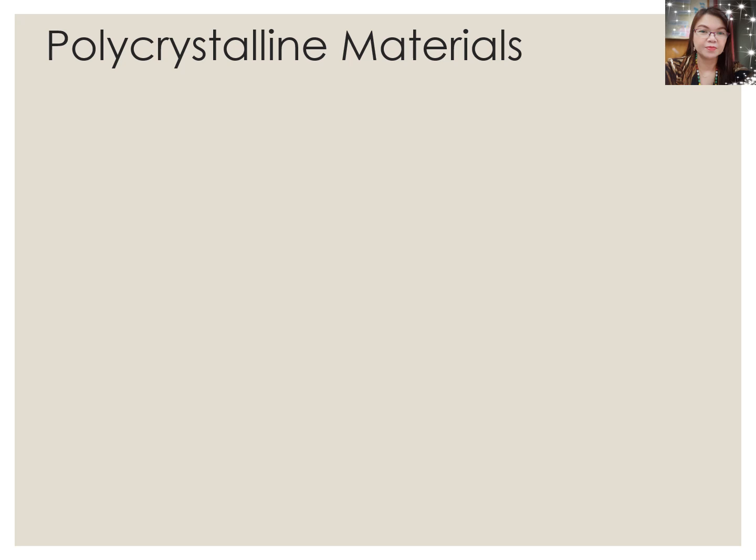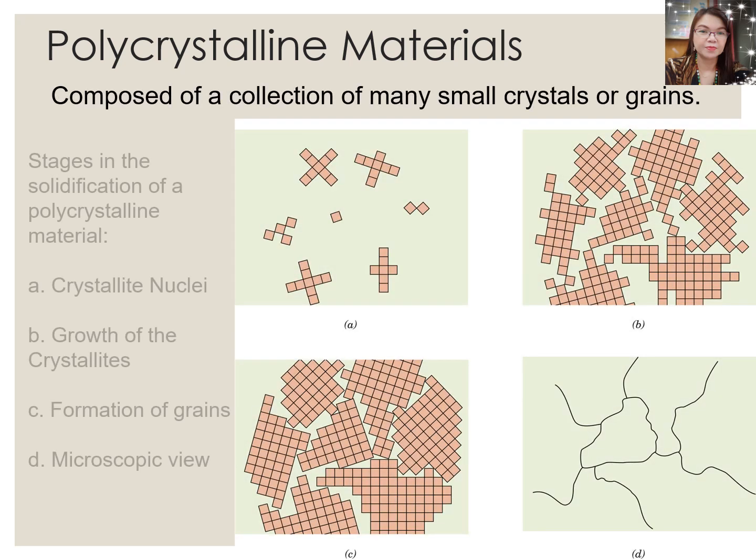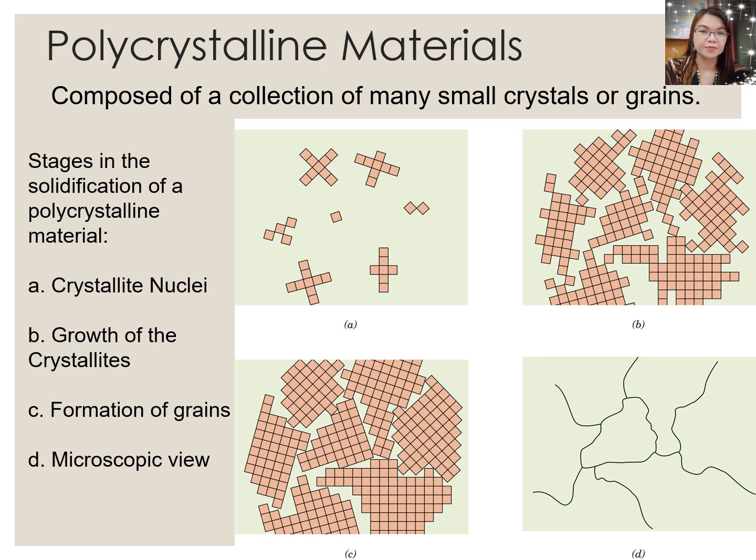Polycrystalline materials are those atoms which are situated in a repeating or periodic array over large atomic distances, that is, a long-range order exists, such that upon solidification the atoms will position themselves in a repetitive three-dimensional pattern in which each atom is bonded to its nearest neighbor atom. What you can see on this figure are the different stages for the solidification of a polycrystalline material, which starts with letter A, crystallite nuclei, then B, the growth of the crystallites, C is the formation of the grains, and D is the microscopic view.